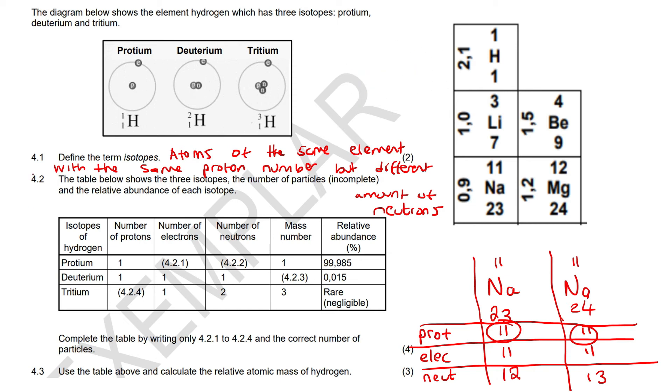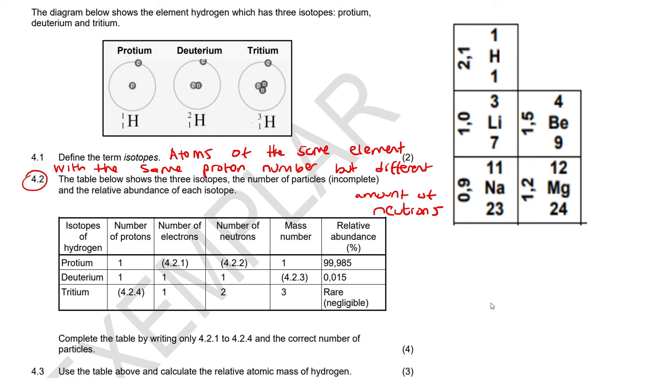So, that's the first question. Now, this one says, the table below shows three isotopes, the number of particles, which is incomplete, and the relative abundance of each isotope. This question says, complete the table by writing only 4.2.1 and the correct number of particles. So, let's have a look. If we look at this first one, number of protons. Well, okay, let's first look at this.